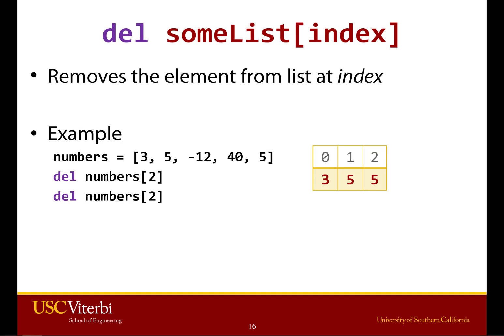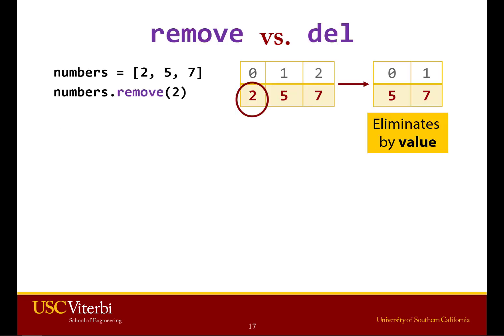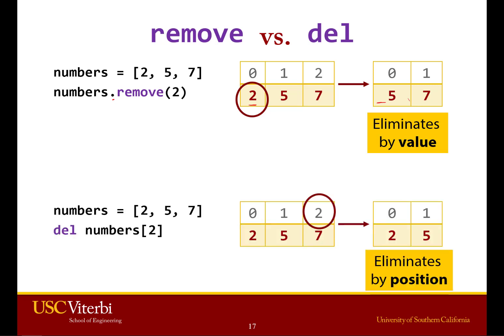There is a second way to remove items from a list. Notice the syntax is very different. It's called remove. You say numbers.remove — this is looking not at position, but at the actual value. So when you say remove 2, it gets rid of that element by value, whereas del numbers[2] gets rid of the element at that index. So you can remove by position or remove by value. Just make sure you probably have an if statement before you remove something to do the error checking to make sure that value actually exists in the list.